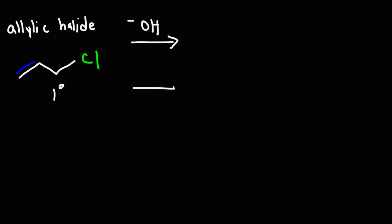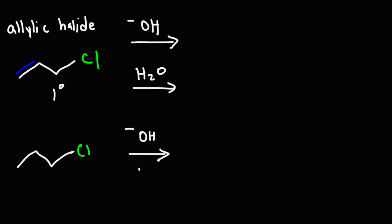If we were to use water in addition to hydroxide, will it be an SN1 or SN2 reaction? Now, if we compare that with propyl chloride: if we were to use hydroxide, this would be an SN2 reaction, because we have a primary alkyl halide, and that favors SN2 reactions.